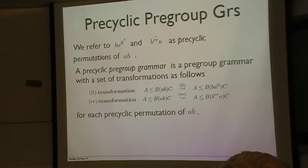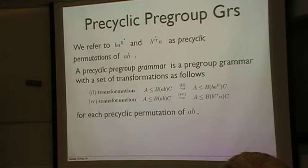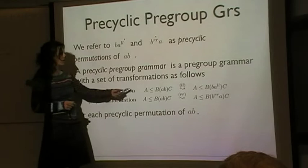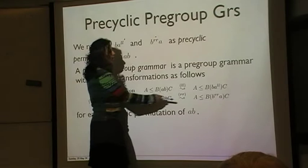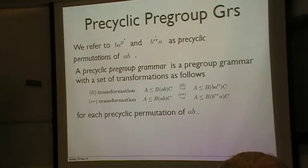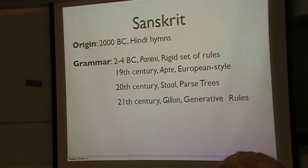So, then I'm going to try to extend this, so that's what I've been doing in this paper, extend these pregroup grammars to precyclic pregroup grammars. I'm going to refer to BAL and BRRA as precyclic permutations of AB, and I'm going to define a precyclic pregroup grammar to be a pregroup grammar with a set of transformations like so. So whenever you have A, B, A, B, C, and BAL is a precyclic permutations of AB, then you also have this kind of reduction. B, BAL, C is above A. And a symmetric one for this.